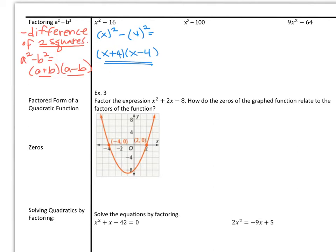Let's try another one: x squared minus 100. If we take a look at splitting up the two perfect squares, x squared stays x, and 100 would be the same as 10 squared. Now this only works for subtraction. When we split this up into the two smaller parentheses, one is addition and one is subtraction. It's that quick and easy to factor.